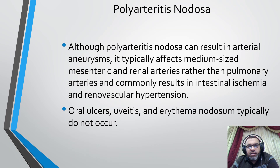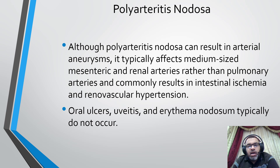Another differential diagnosis is polyarteritis nodosa. Although polyarteritis nodosa can result in arterial aneurysms, it typically affects medium-sized mesenteric and renal arteries rather than pulmonary arteries, and commonly results in intestinal ischemia and renovascular hypertension. Oral ulcers, uveitis, and erythema nodosum typically do not occur.